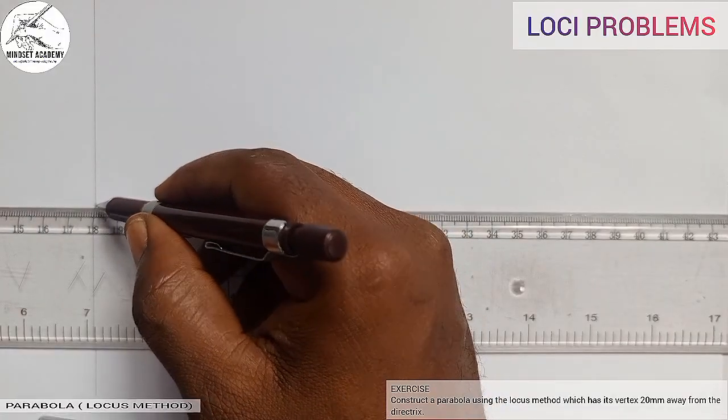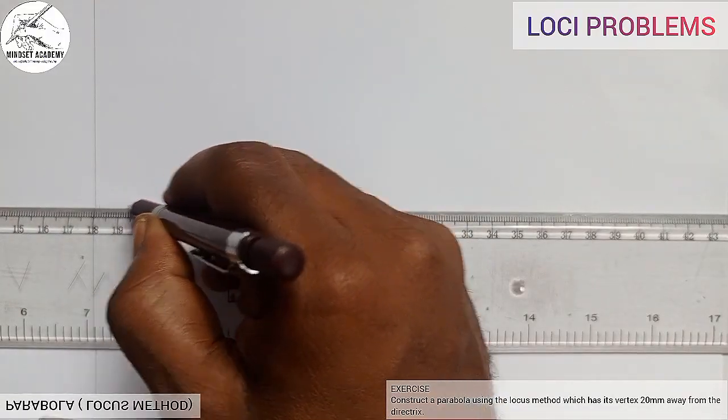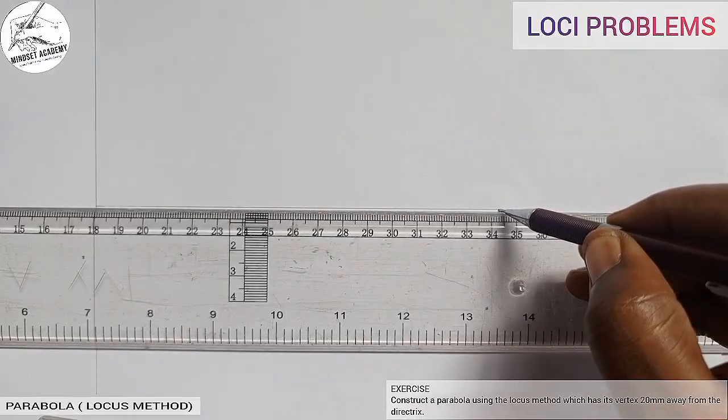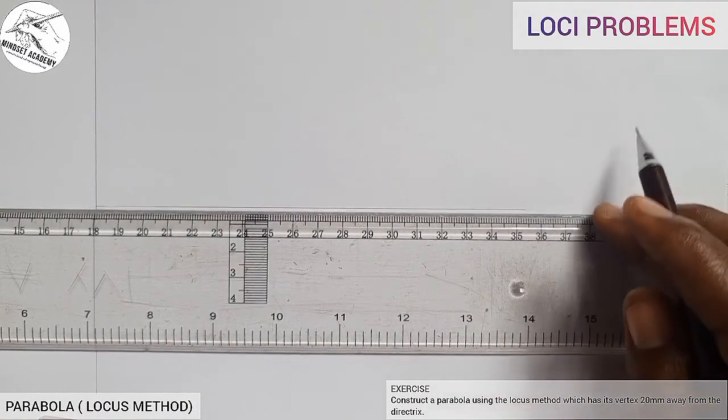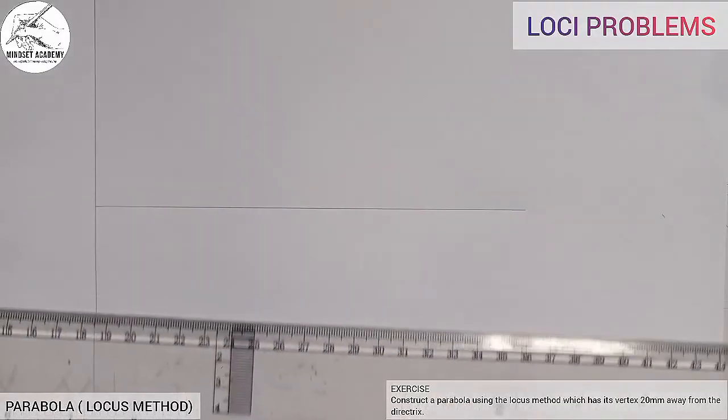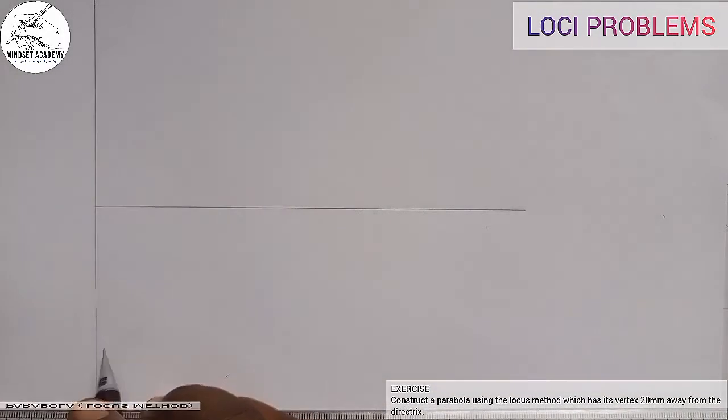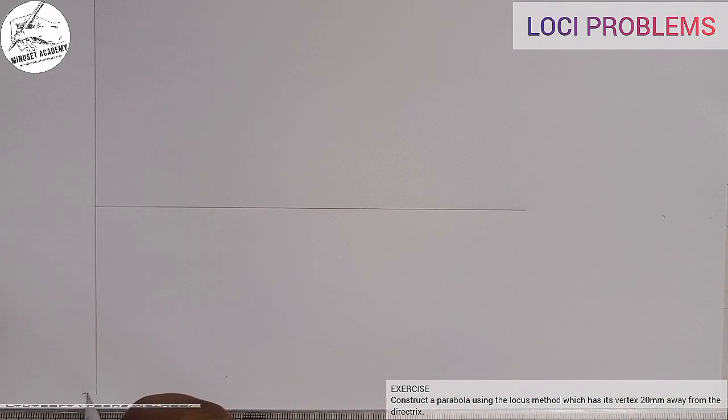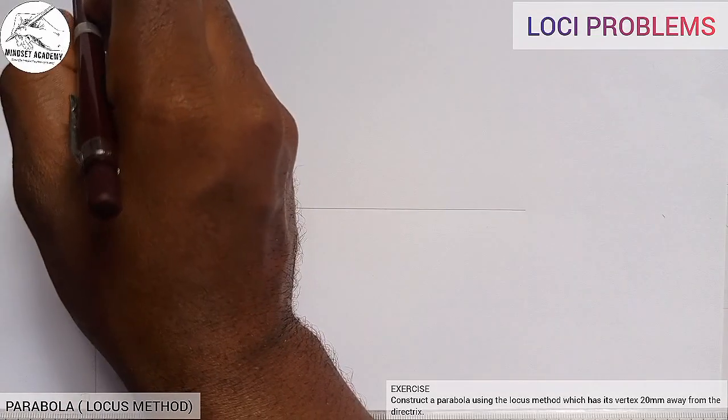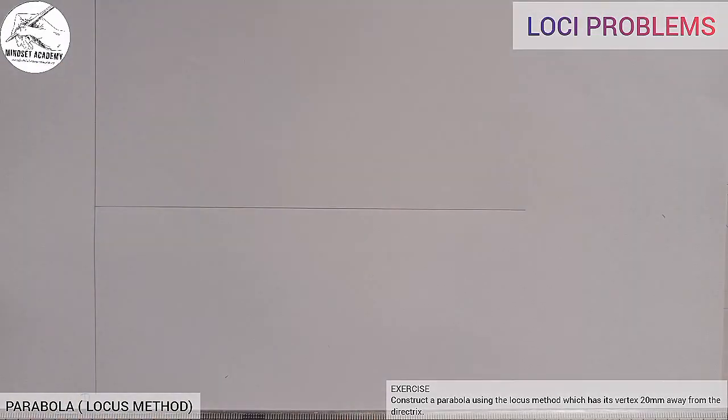So I will just place it this way and I am going to draw this. I will thicken it. You can see that. This is my directrix. Let me call it D-D.